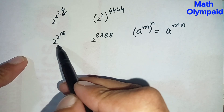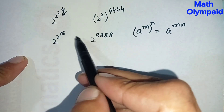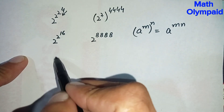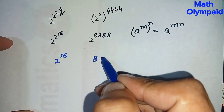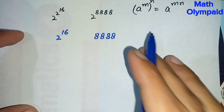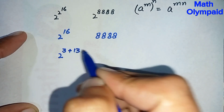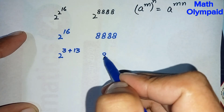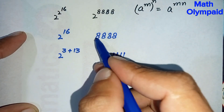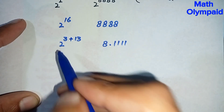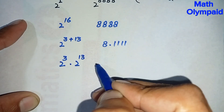On both sides the bases are the same, so we compare just the powers. The power on the left hand side is 2 raised to power 16, and the power on the right hand side is 8 times 8 times 8. Next, we can write 16 as 2 raised to power 3 plus 13, so we write it as 2 raised to power 3 times 2 raised to power 13, and the right side as 8 times 111.